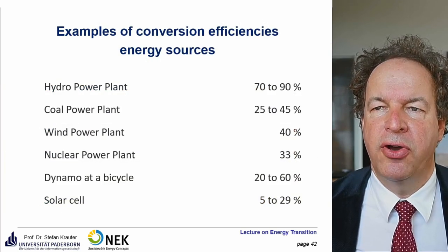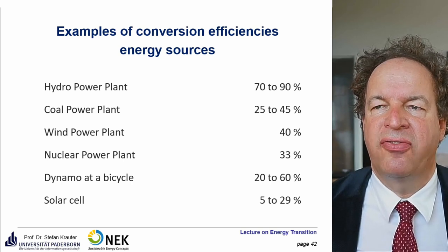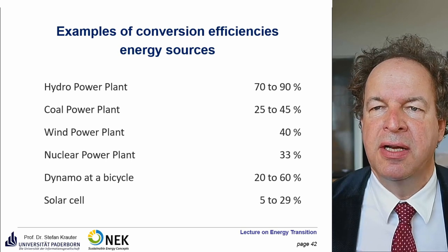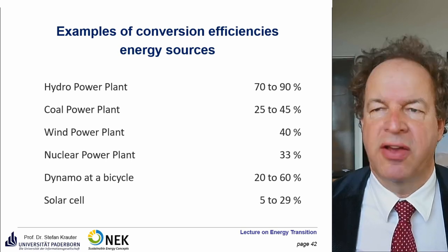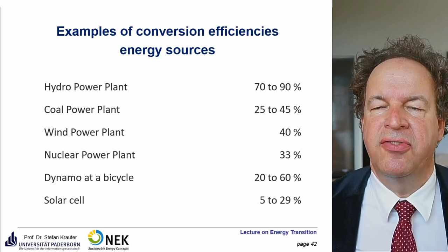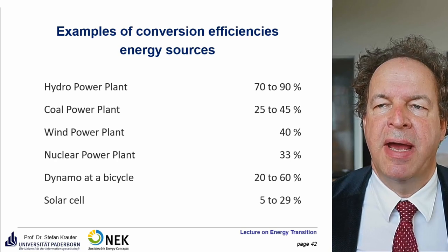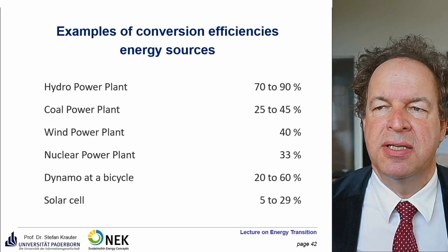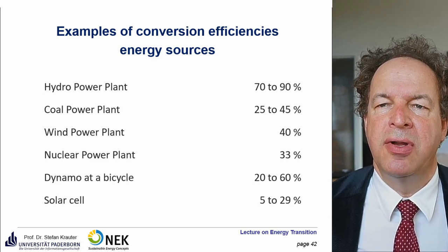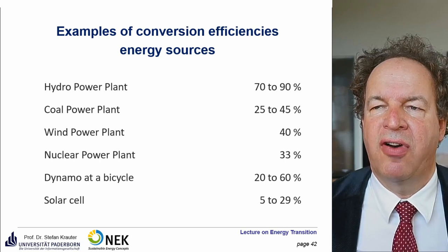To give you some ideas about conversion efficiencies: a modern hydropower plant has efficiency above 80%, sometimes over 90%; really bad ones are 60–70%. A coal power plant is quite limited in efficiency due to the Carnot efficiency, which says the maximum efficiency depends on the temperature difference achievable. Even modern coal power plants have an efficiency in the vicinity of 40–45%.